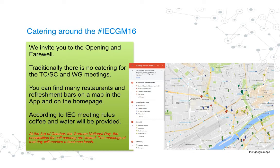Nutrition is an important thing to preserve energy during the meetings. According to the Blue Book, we are not able to provide any lunch or dinner to the experts. If you calculate it with 3,000 experts, it is unaffordable even for the German National Committee. There are some places where you can have your lunch. In the Cap Europa and the Maritim Hotels it is easy because there is a very large mall with lots of different restaurants. You will get water and coffee in the meeting rooms.